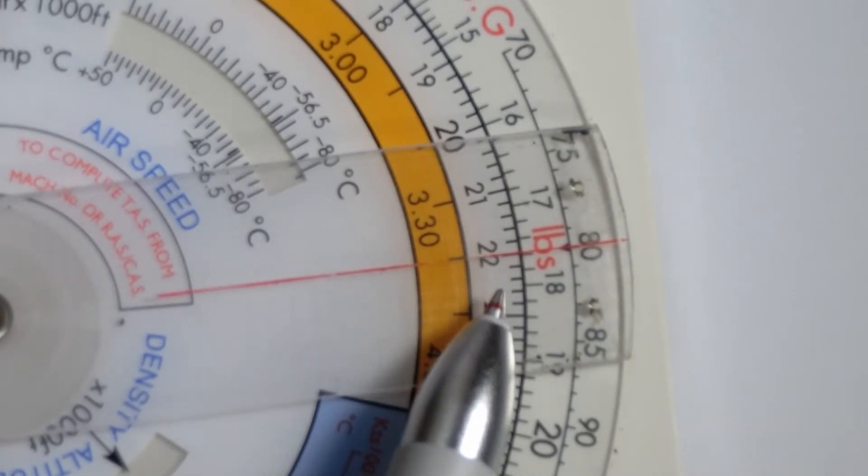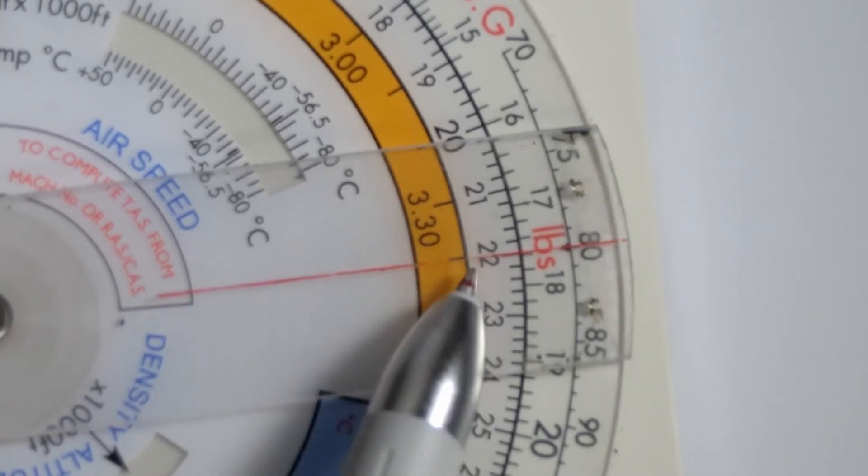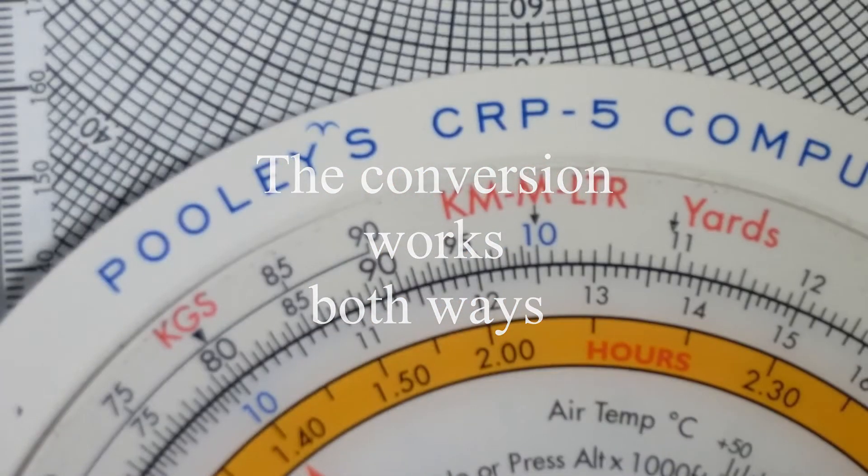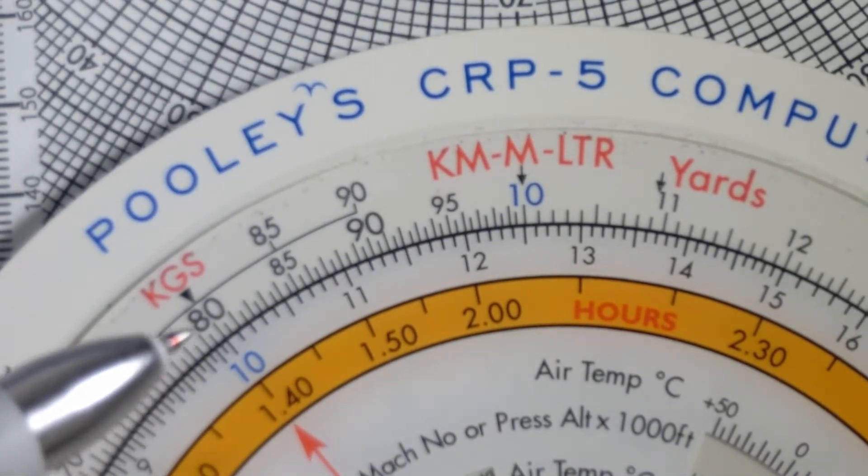That is a very quick way of doing a conversion. The opposite is true, of course. 2.2 pounds is equivalent to 1 kilogram.